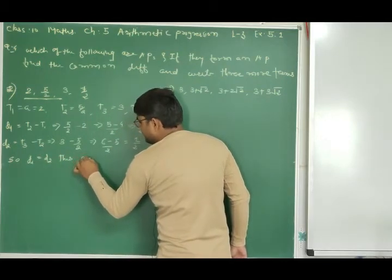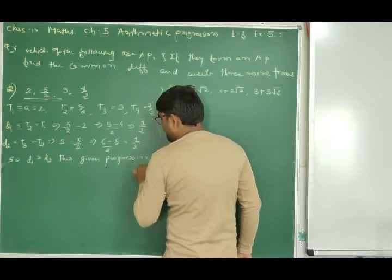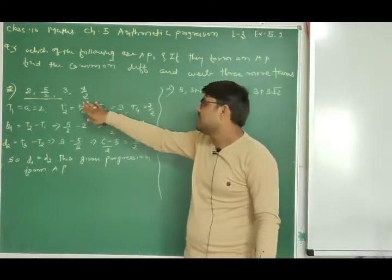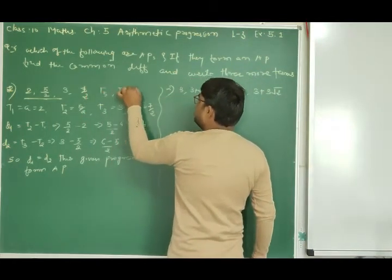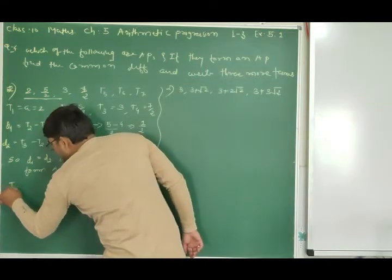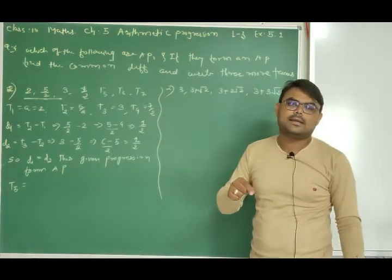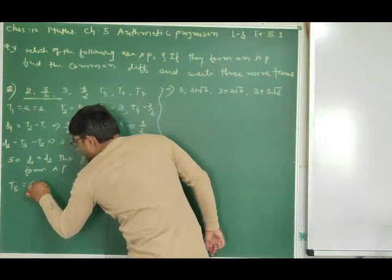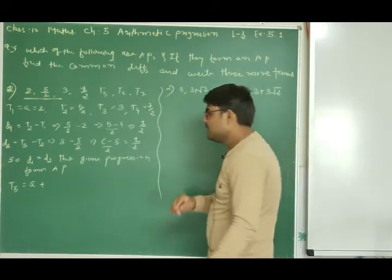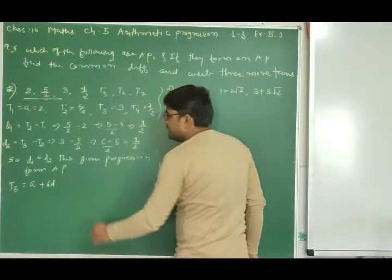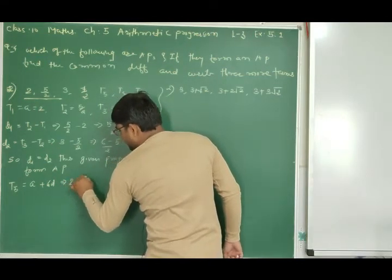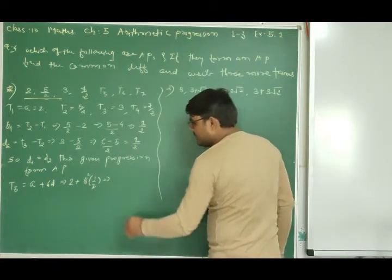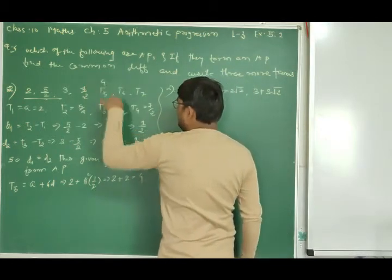Now we have to find the next 3 terms: T5, T6, T7. For T5, we add D four times to A: T5 = A + 4D = 2 + 4 × (1/2). The 4 and 2 cancel, giving 2 + 2 = 4. So T5 = 4.